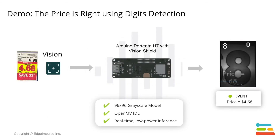In this demonstration we're going to show you how to build a price label detection system using digits recognition, and finally see it running locally on the Arduino Portenta H7 Plus Vision Shield.